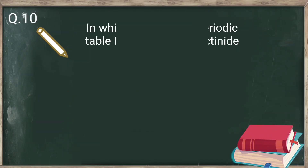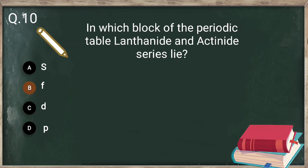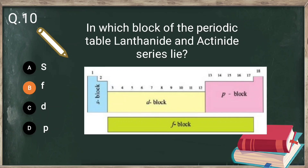Question number 10: in which block of the periodic table do the lanthanide and actinide series lie? The lanthanides and actinides lie in the F block. F block contains the lanthanide and actinide series.